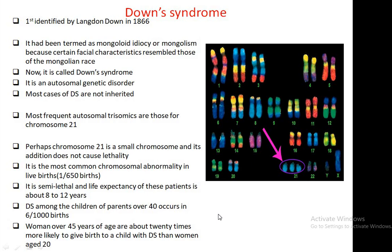This disease was first described or identified by Langton Down in 1866. It had been termed as Mongoloid idiocy or Mongolism, because certain facial characteristics resembled those of the Mongolian race. Now it is known as Down syndrome.